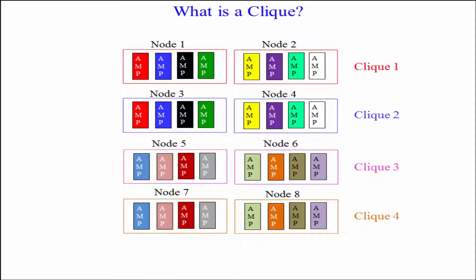Notice node number one and the different colored amps, and node number three, the different colored amps. Those amps are clustered together — cluster one, two, three, and four — for fallback purposes. As we discussed earlier, you're never going to see an amp in the same node that's in the same cluster, in case the node goes down.